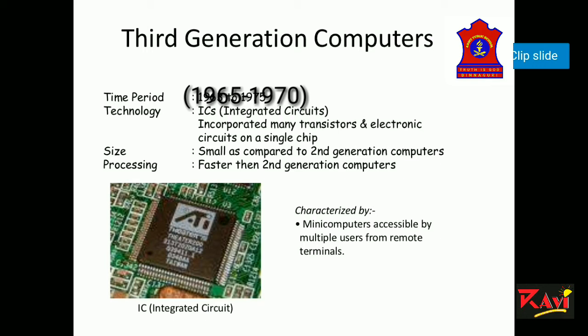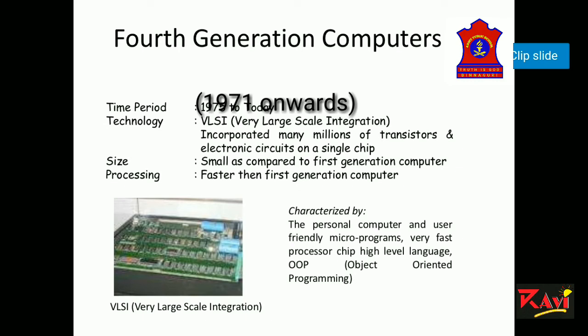Now let's look at the fourth generation computer. The fourth generation computers started in 1971 and used a microprocessor for the first time. The size of the computer became very small as thousands of integrated circuits were built into a single silicon chip. Examples include Intel 4004, Macintosh, and IBM 370. They used new programming languages like C, C++, and Java.